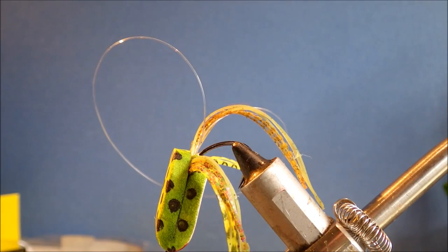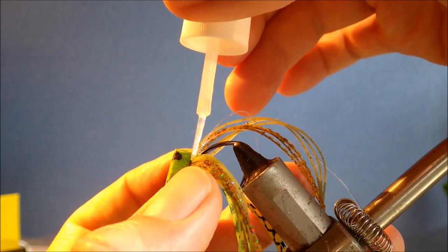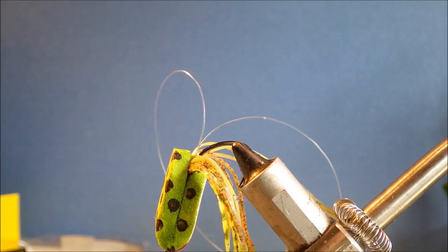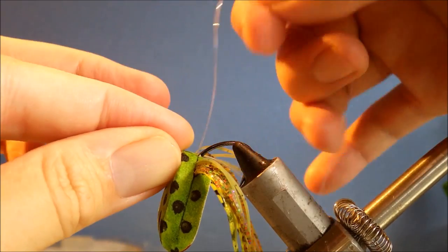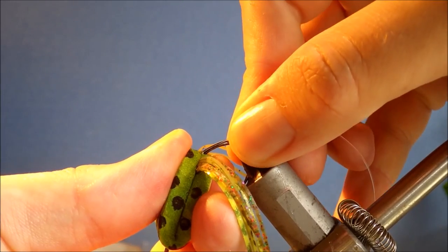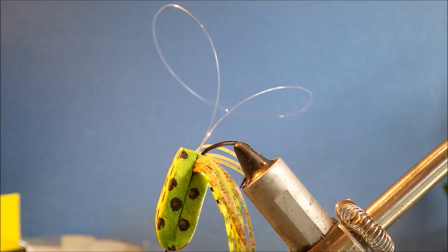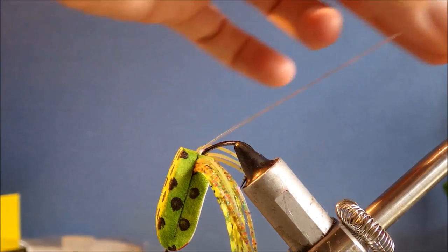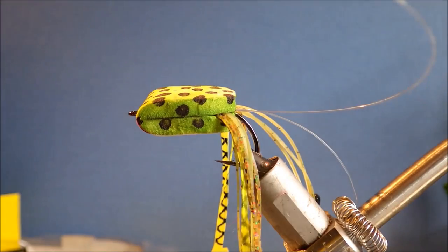And then just to make sure the back's well stuck as well. Make sure your weed guard's coming out the back either side of the shank. There you go. So that's your body more or less done.